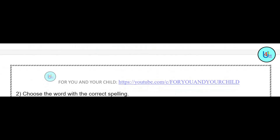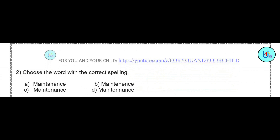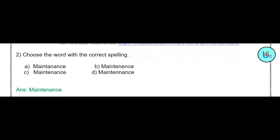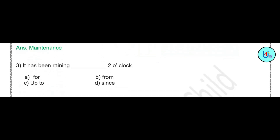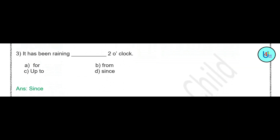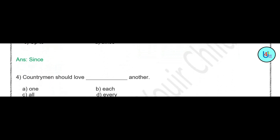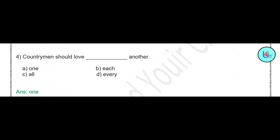Next question: choose the word with the correct spelling. Four different spellings of 'maintenance' are given — you have to identify the correct one. The correct answer is option number C. Next question: 'It has been raining dash 2 o'clock.' Options are: for, from, up to, since. The correct answer is 'since' — it has been raining since 2 o'clock.